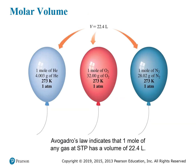To illustrate, here are three different balloons all at the same temperature and pressure — STP, 273 K and one atmosphere. They each contain one mole of gas: the first is one mole of helium, the second is one mole of oxygen gas, and the third is one mole of nitrogen gas. Since they are all at STP with one mole each, all three balloons have the exact same volume of 22.4 liters.